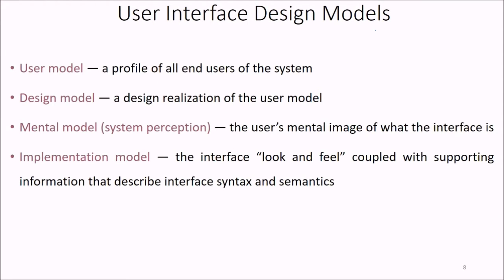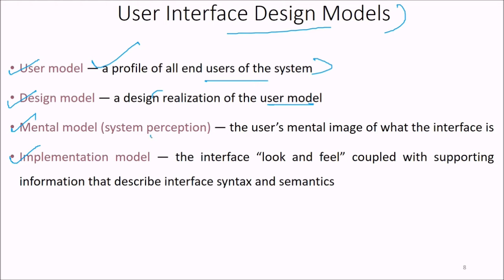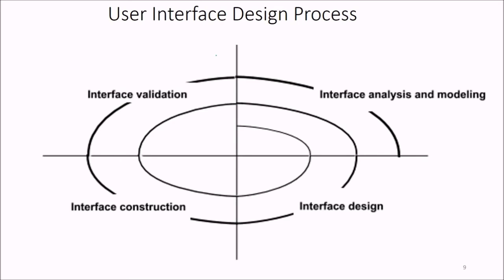User interface design models include the user model, design model, mental model, and implementation model. The user model is the profile of all users of the system — there can be advanced users and naive users. The design model is the design realization of the user model. The mental model is the user's perception or image of what the interface is. The implementation model describes the look and feel of the interface coupled with supporting information describing interface syntax and semantics.